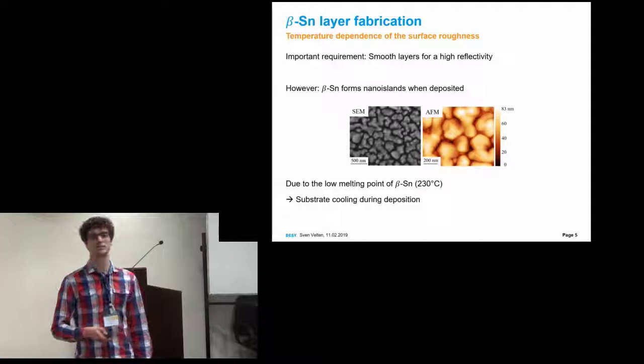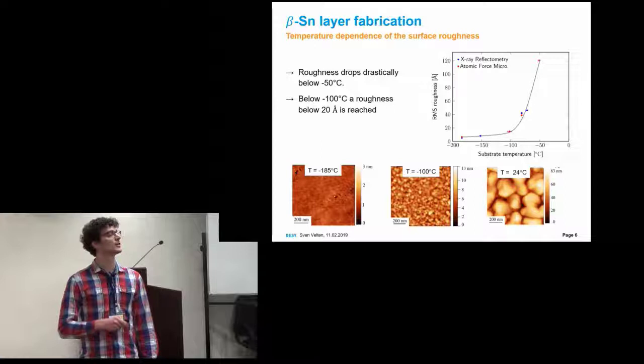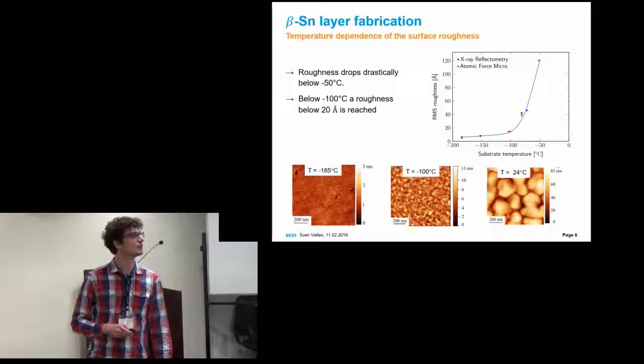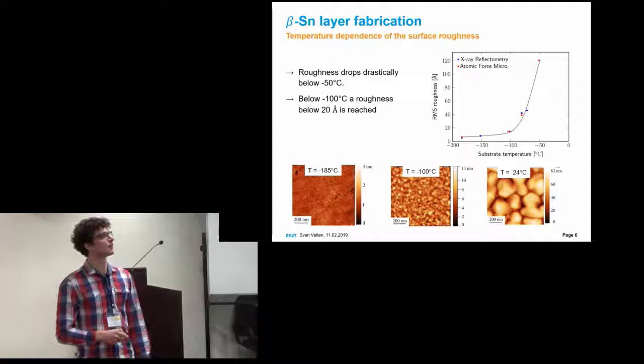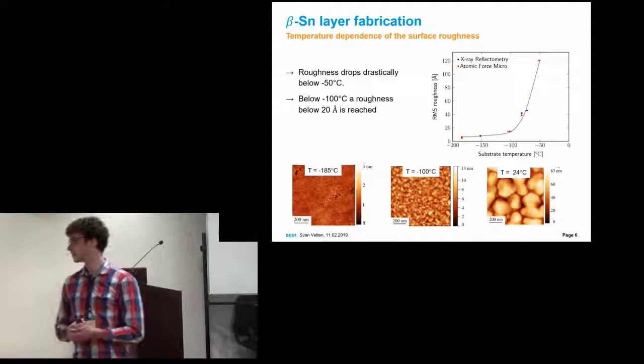We measured the roughness with X-ray reflectometry and atomic force microscopy for different substrate temperatures. Indeed, below minus 50 degrees, this roughness drops drastically. Below minus 100 degrees, we can really get a roughness below 2 nanometers. Further, we can get roughnesses below 1 nanometer. This is perfect for all our experiments.